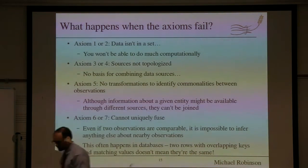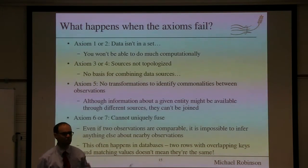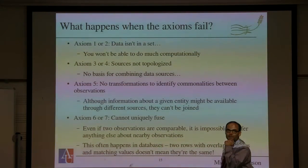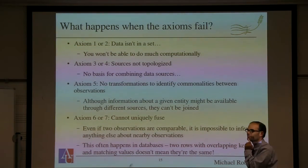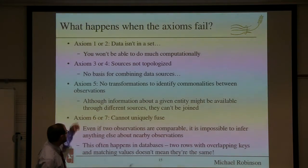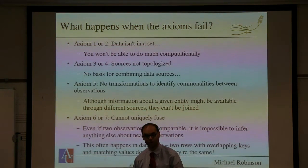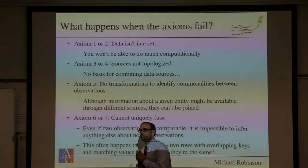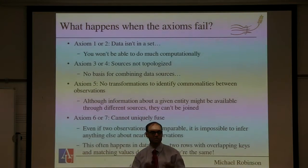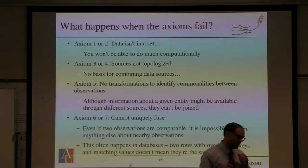What happens when these axioms fail? If you don't have your data in a set, I'm not sure mathematics can help you — and yes, we are doing category theory anyway, so hold that thought. If I'm not topologizing my sources — not saying which data sources can be related — then we don't have a basis for combining data sources. I don't know that these two sensors or tables are talking about the same phenomenon, so I really can't have a basis for talking about fusion at all.